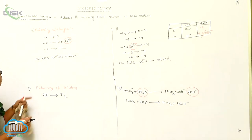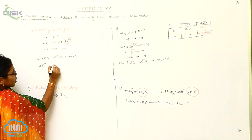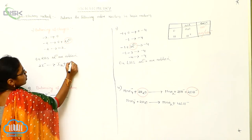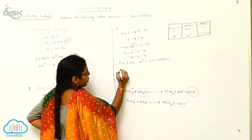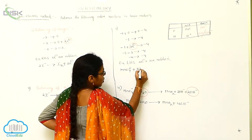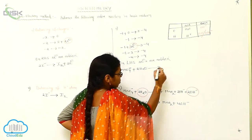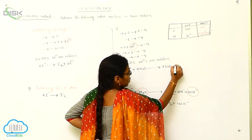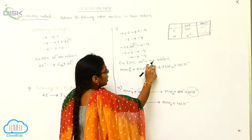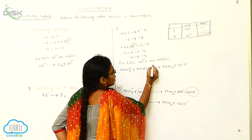So now what is our reduction half-reaction? You can write: MnO₄⁻ plus 2H₂O gives MnO₂ plus 4OH⁻. And on the left-hand side, three electrons are added, so you can write plus three electrons on the LHS.